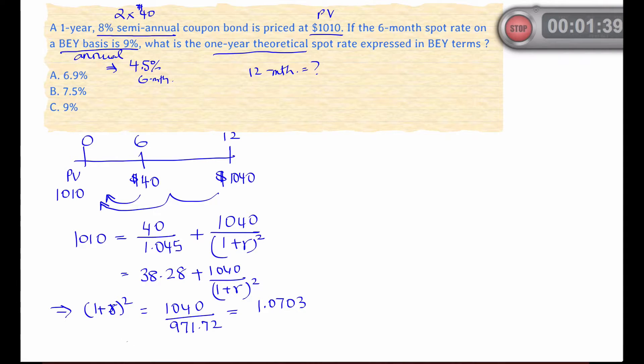We end up with an r which is 3.45%. Now remember this is the six-month rate, so the bond equivalent yield is two times that amount, which is 6.9%. So A is the correct answer. The crux of this problem was determining the implied discount rate for the final payment given the price of the bond.